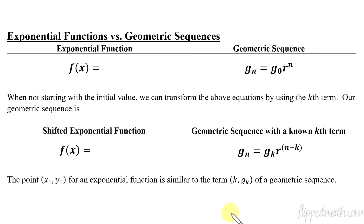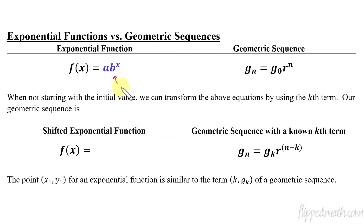Now let's compare exponential functions and geometric sequences and how those are similar. We have the geometric sequence from our last lesson, and then you jump over to the exponential function: a times b raised to the x. In a lot of problems I'm going to write b as r, because r is easy to remember — it has to do with ratio, and it's the base of the exponent.